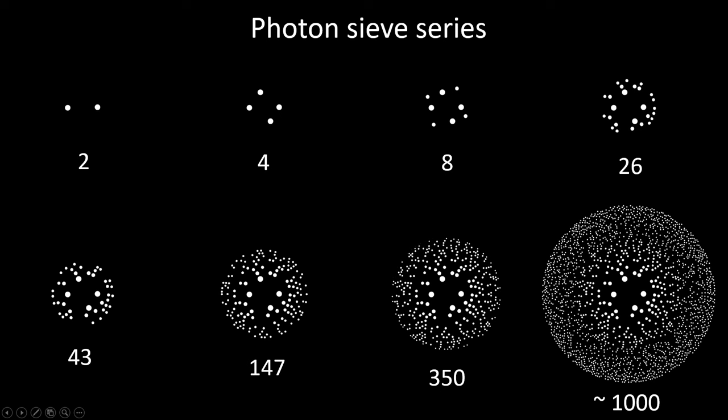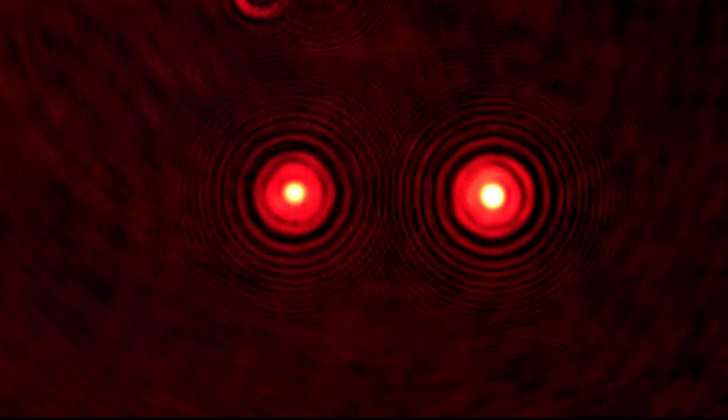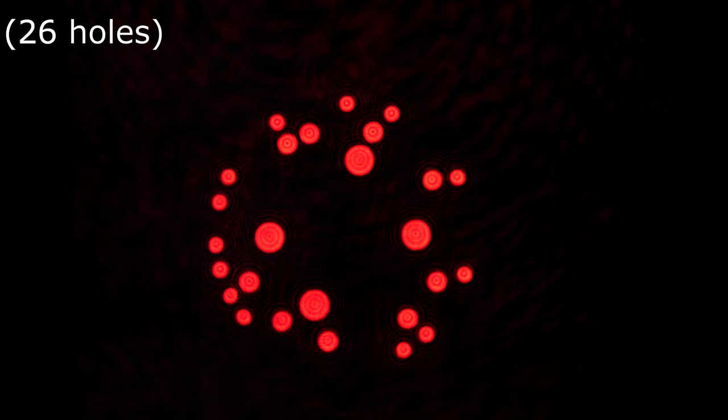Let's compare the different sieves and the diffraction patterns they generate under the microscope. Starting with the one containing only two holes: here you see the holes in focus, and if we move the focal plane of the microscope upwards, we observe the diffraction pattern caused by the two holes. Basically with just two sources you observe a sort of focal line or plane in between the two holes. Here is the pattern with 26 holes — more than three times as many as the previous sieve — and its diffraction pattern shows a big improvement in the definition and brightness of the focal point compared to the surrounding area.